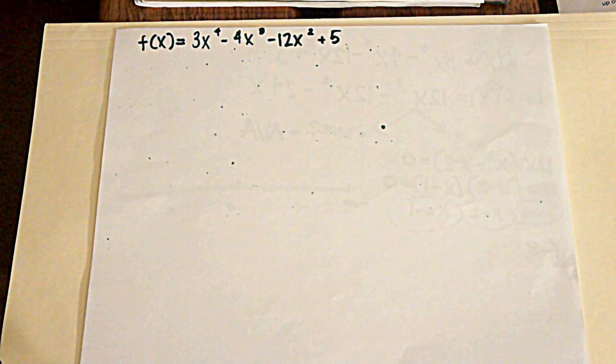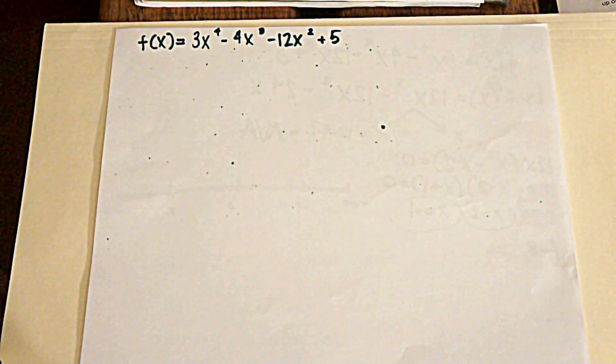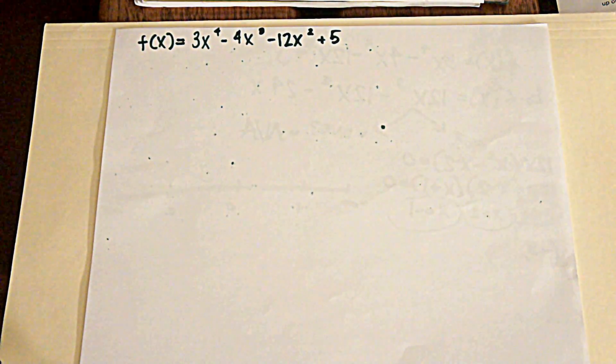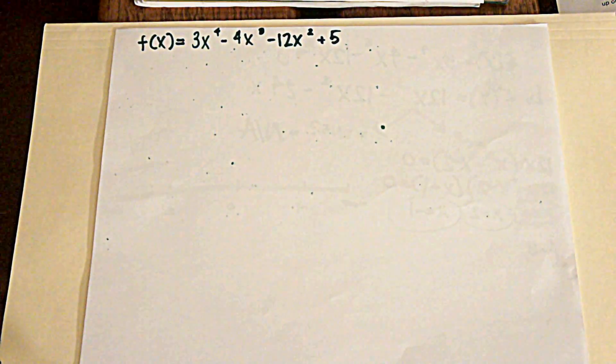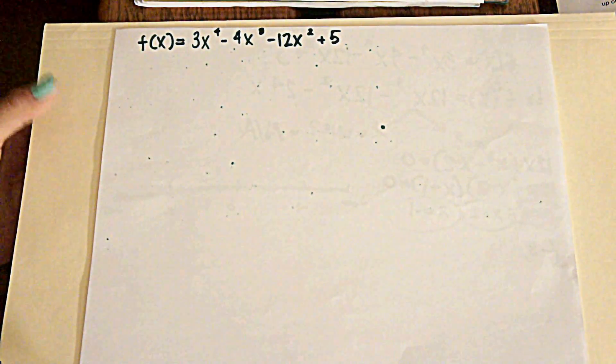So the problem says, using calculus, identify the open intervals on which f of x equals 3x to the 4th minus 4x to the 3rd minus 12x squared plus 5 is increasing or decreasing.